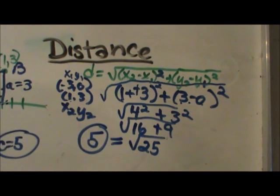And the distance is always positive. So the square root of twenty five has a positive and a negative solution. But in this problem you only want to take the positive answer because distance is always positive.